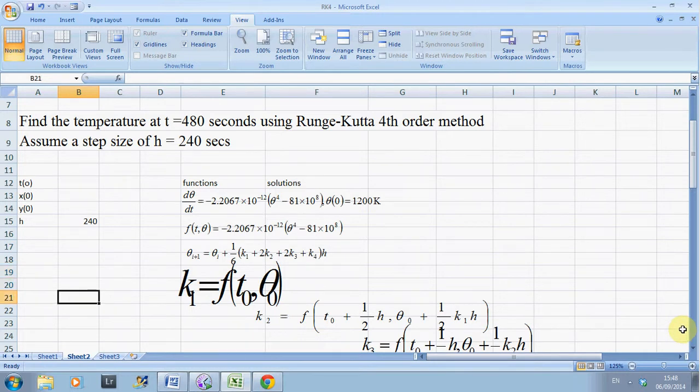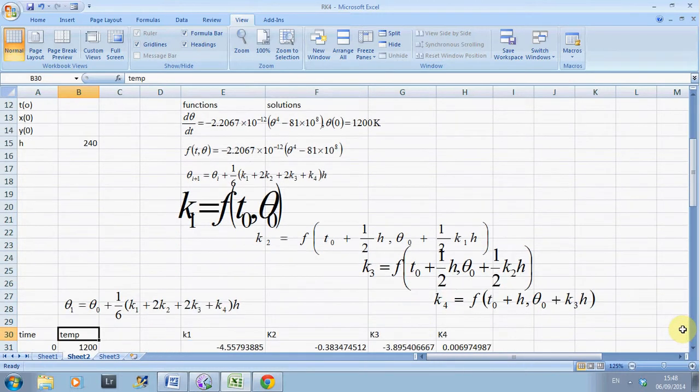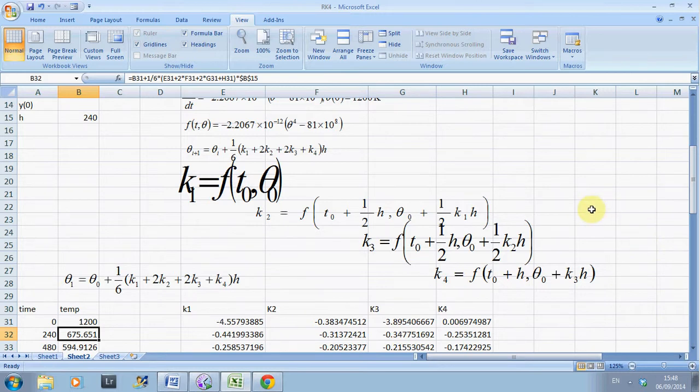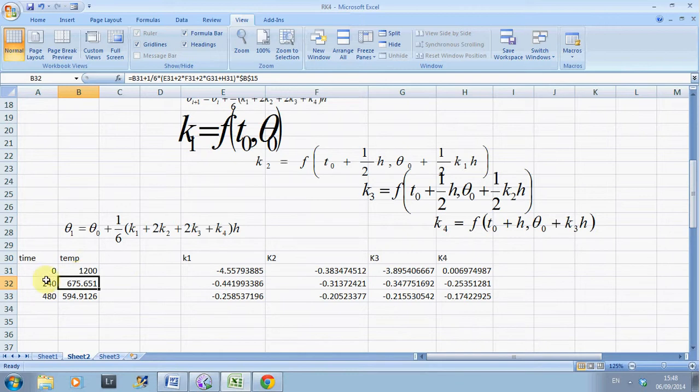So the equation error is there. There's k1, k2, k3 and k4. And then we get the next term, the previous term plus these weighted averages of the different k's.